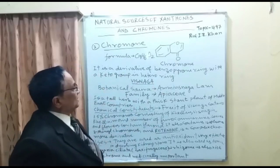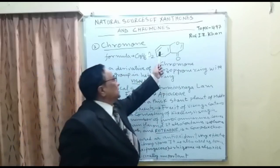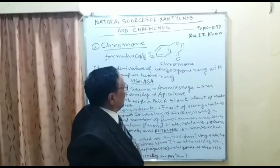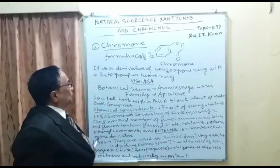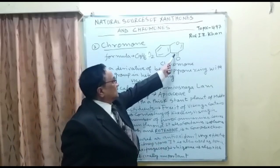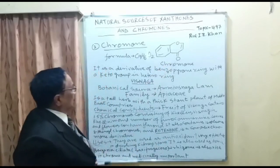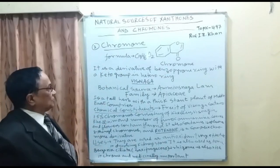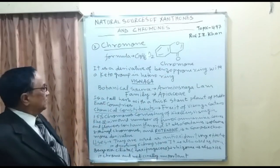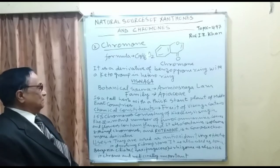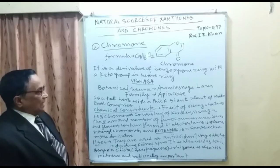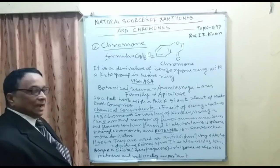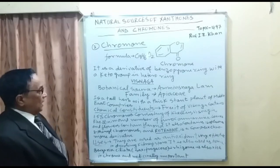Chromone is a derivative of benzopyrone — meaning it has a benzene ring and a pyrone ring, with a keto group in the hetero ring. One natural source is the Visnaga plant, with the botanical name Ammi visnaga, belonging to the Apiaceae family. It is a tall herb with a thick stout stem, found in Middle Eastern countries.